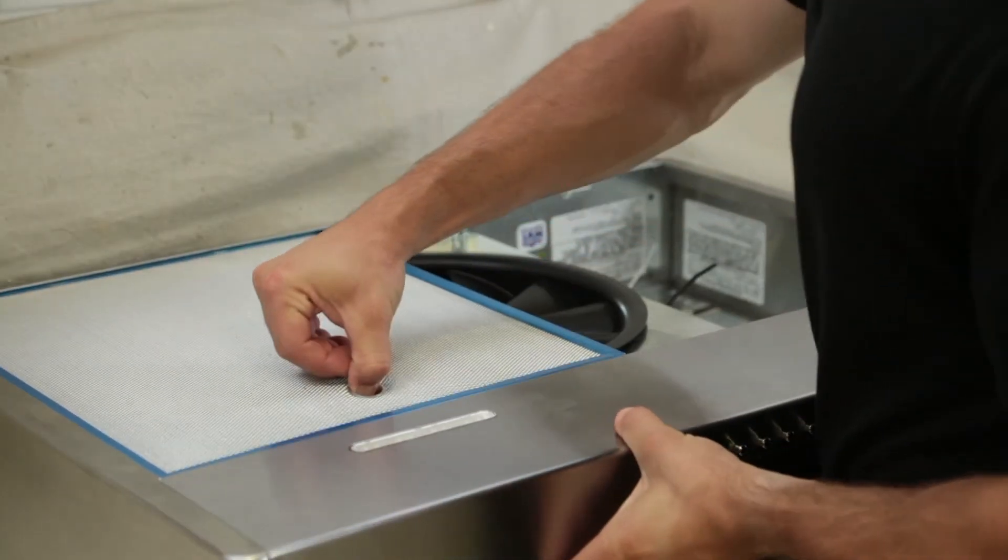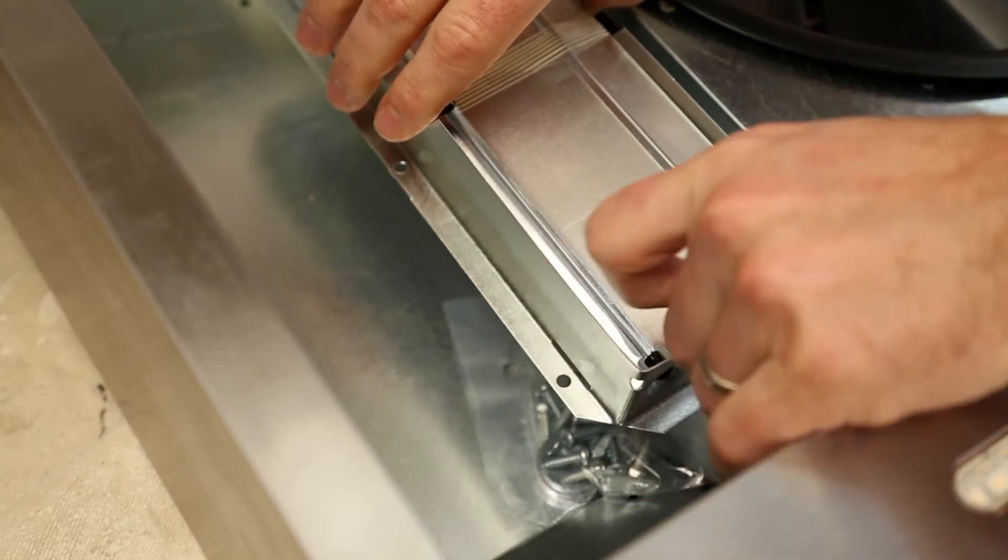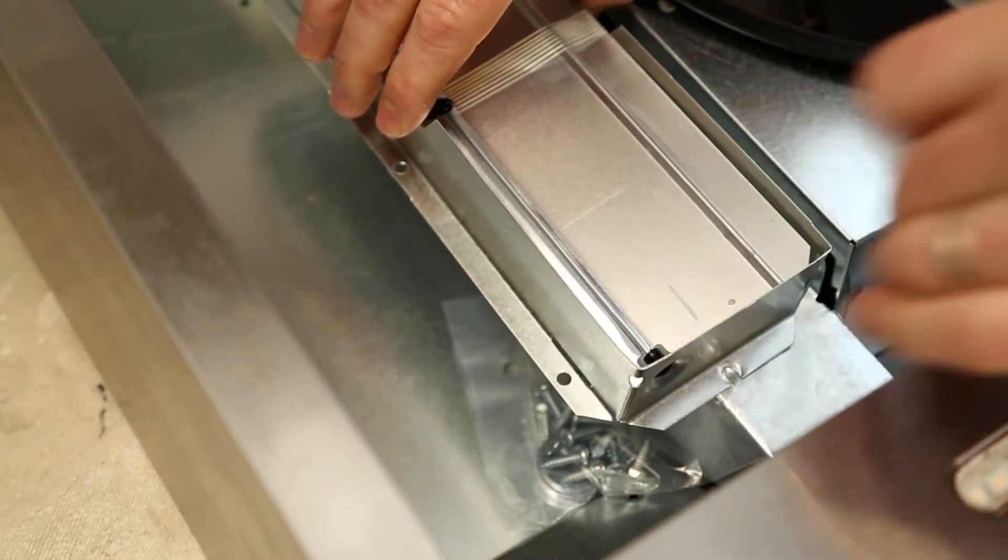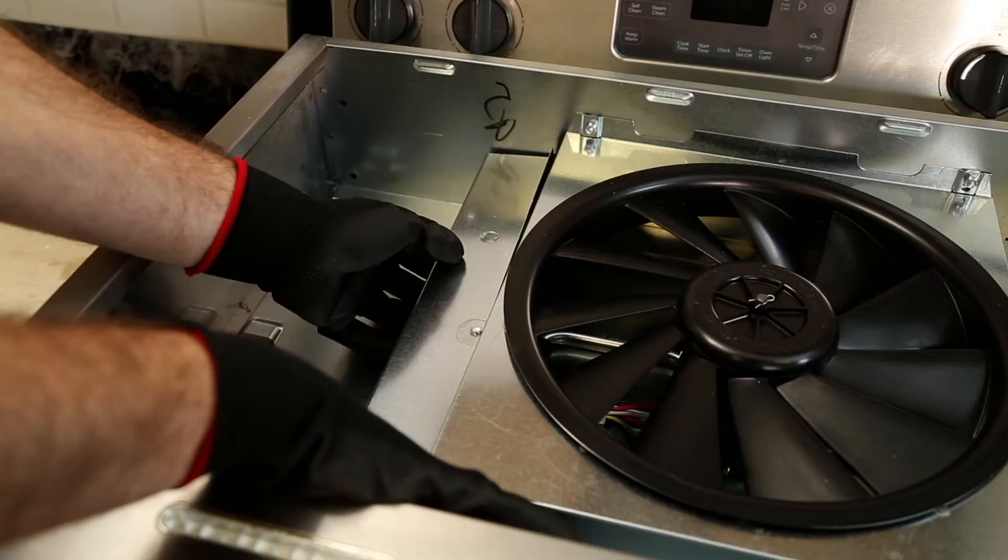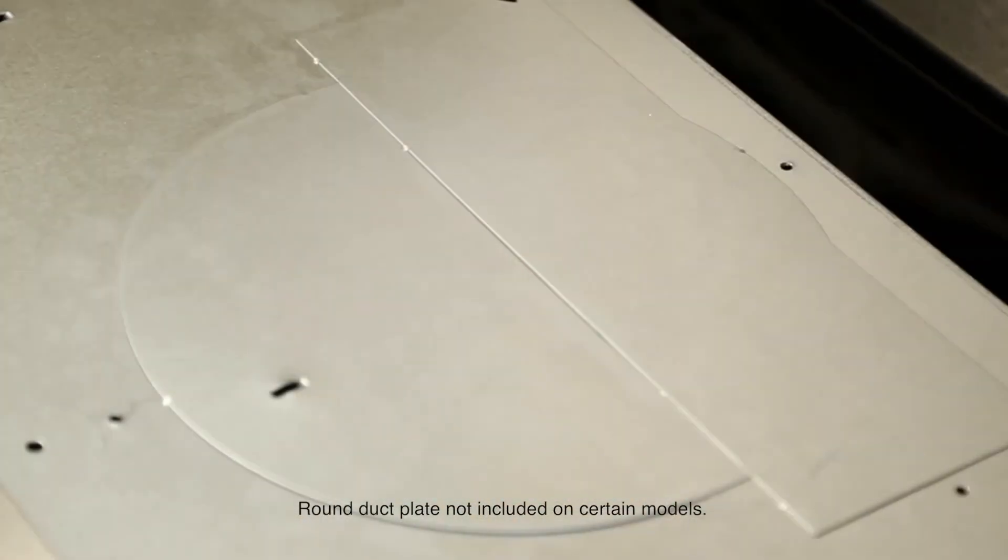To prepare the hood for installation, remove the grease filters. Remove the screws holding the damper assembly to the hood, the parts bag, and the damper assembly inside the hood. Remove the wire cover, the round duct plate, and the electrical power cable knockout.